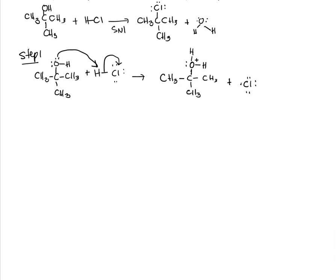anion Cl with four lone pairs, negative charge. Step two: this is what happens in SN1. The intermediate CH3CH3